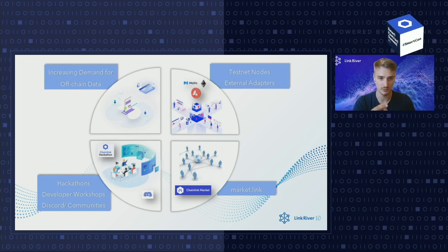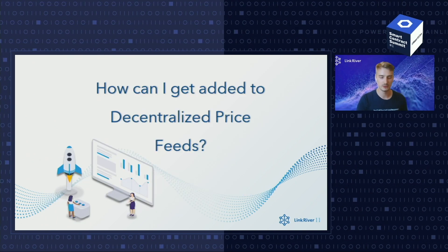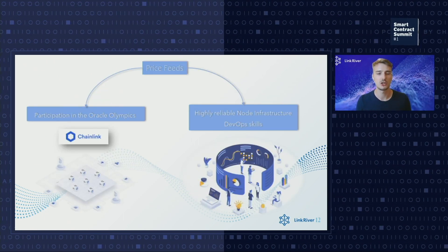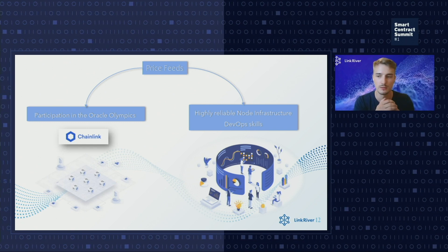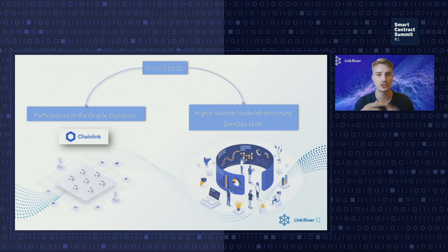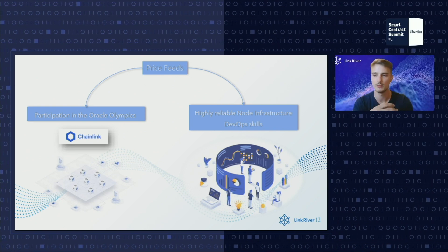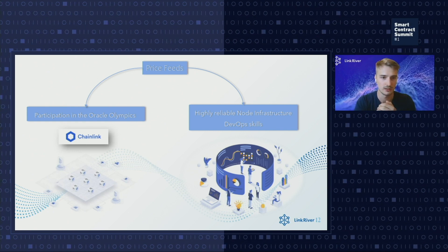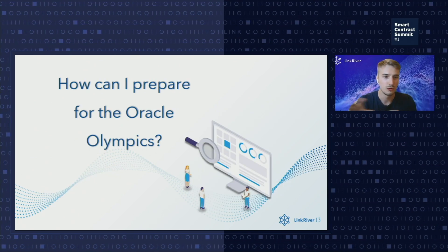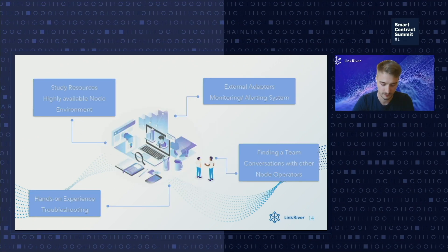You can also try to get added to an access-controlled Chainlink service like price feeds, as there's a huge number of users and TVL across DeFi projects. Chainlink needs to make sure that price data is as accurate and reliable as possible. The next question is: how can I get added to the price feeds? Chainlink hosts a competition called the Oracle Olympics several times a year, where you can prove your node infrastructure's continuous functioning and gain off-chain and on-chain reputation by demonstrating your team's DevOps and troubleshooting skills in various situations that production node operators have faced.